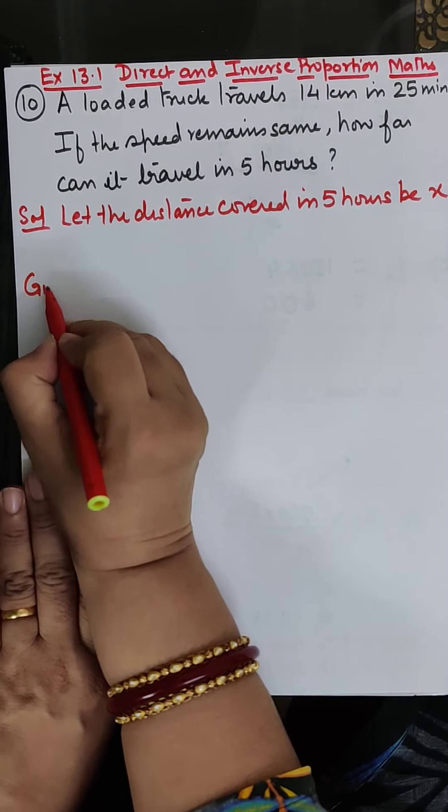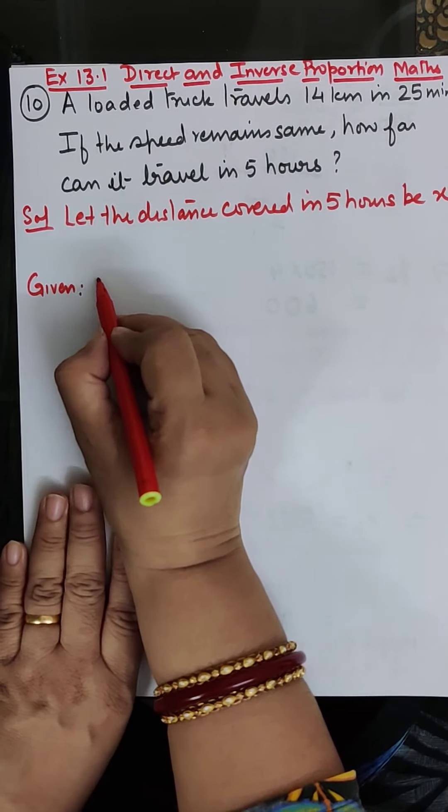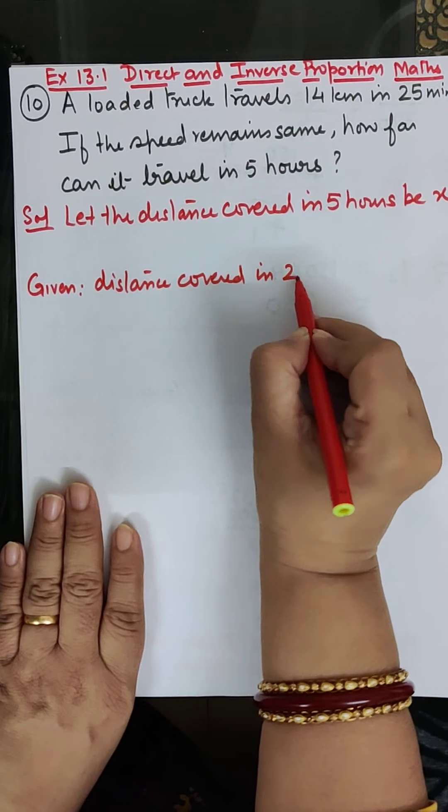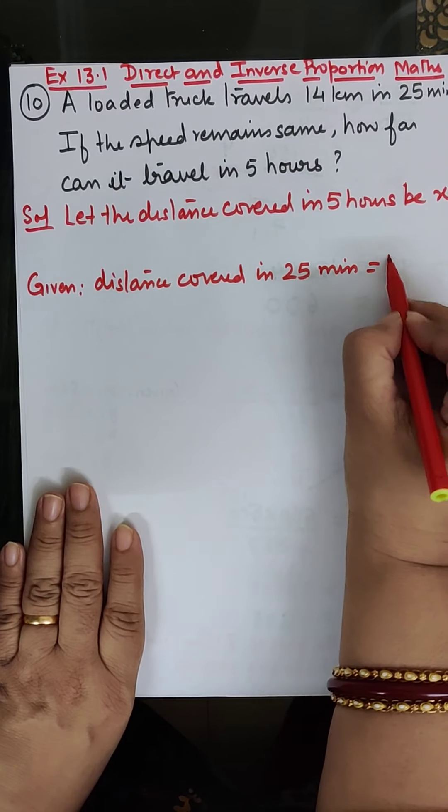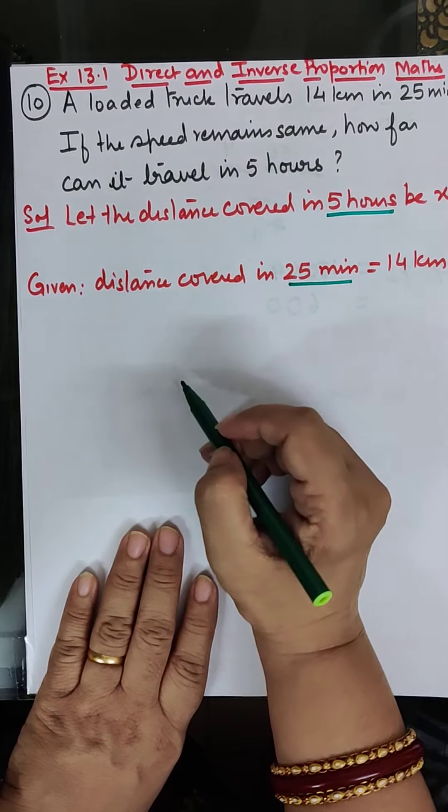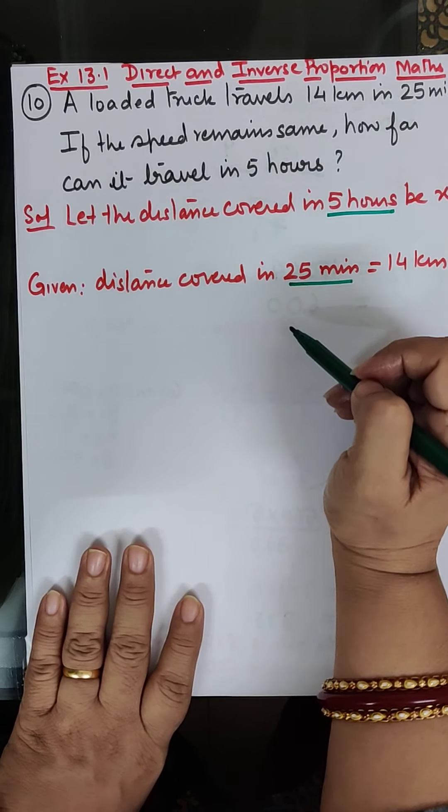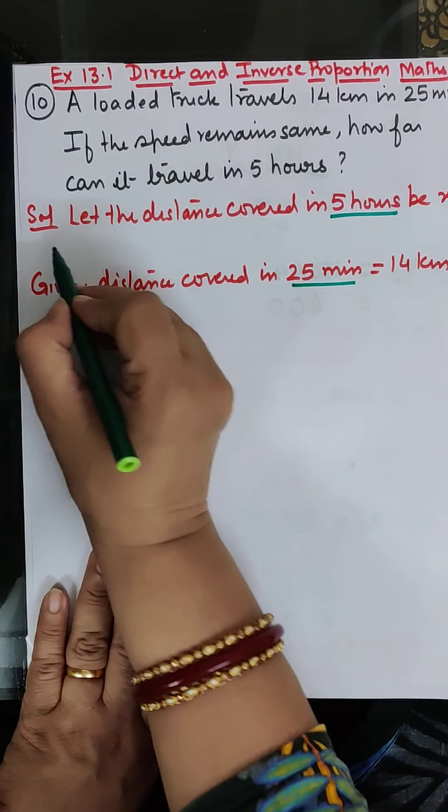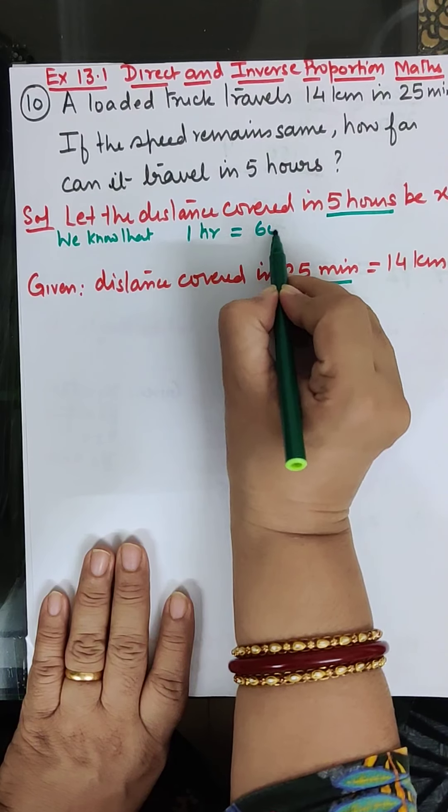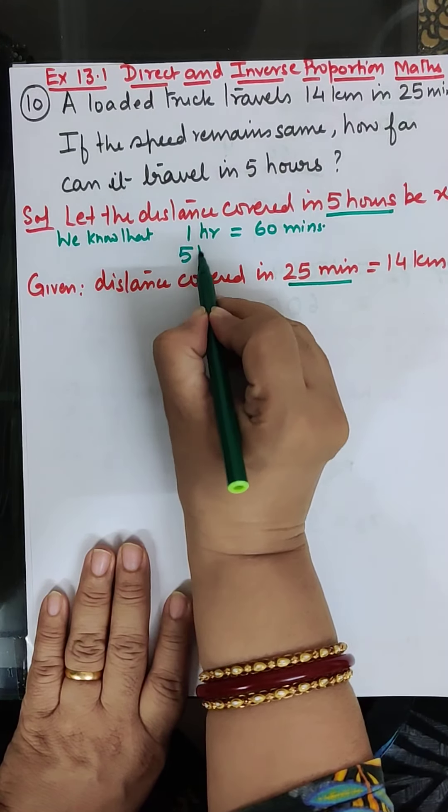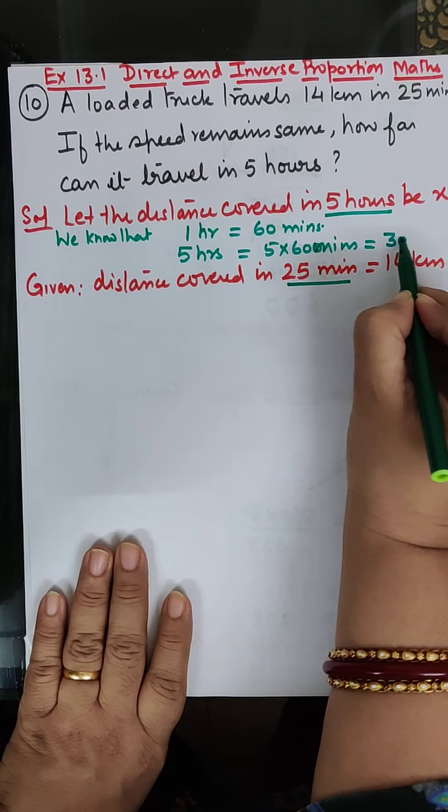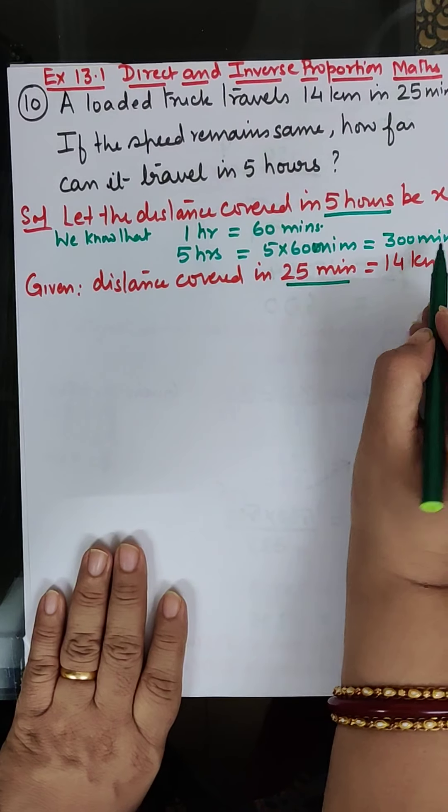How much do I have given? Distance covered in 25 minutes is equal to 14 kilometers. Now, let's see here, this is in minutes and this is in hours, so we have to convert them into same units. We will convert 5 hours. We know that 1 hour is equal to 60 minutes, so 5 hours will be equal to 5 into 60 minutes, this is equal to 300 minutes. So we will write in 5 hours, 300 minutes.